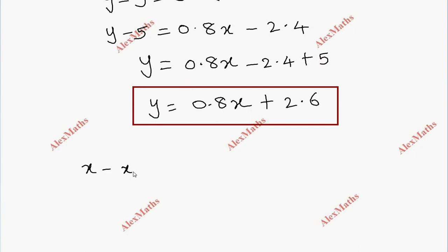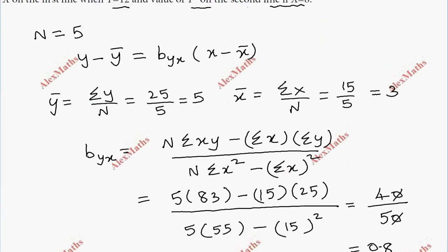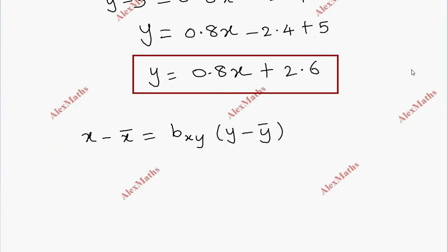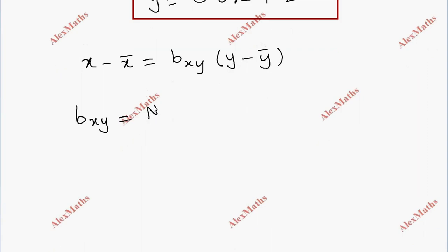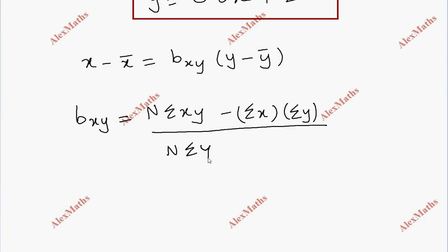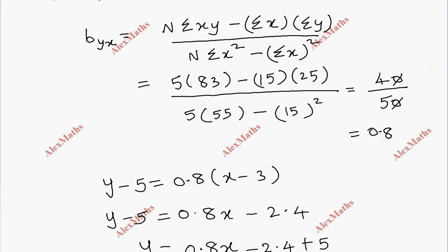Now for the regression line x on y: x minus x-bar equals b_xy into y minus y-bar, so x minus 3 equals b_xy into y minus y-bar. The formula for b_xy is n into sigma XY minus sigma X into sigma Y, whole divided by n into sigma Y square minus sigma Y whole square.